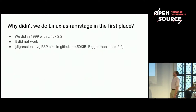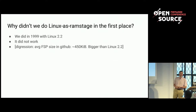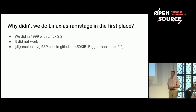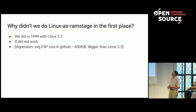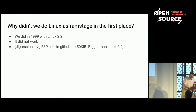That's the first totally ridiculous ROM stage that didn't work. Let's pretend we got SDRAM working — why didn't we do Linux as the RAM stage in the first place? We actually did. In 1999 I did it with Linux 2.2 — didn't work. Interesting thing: I quickly looked at all the FSP binaries on GitHub and they averaged 450K, which is bigger than the Linux kernel we were putting in flash back then.